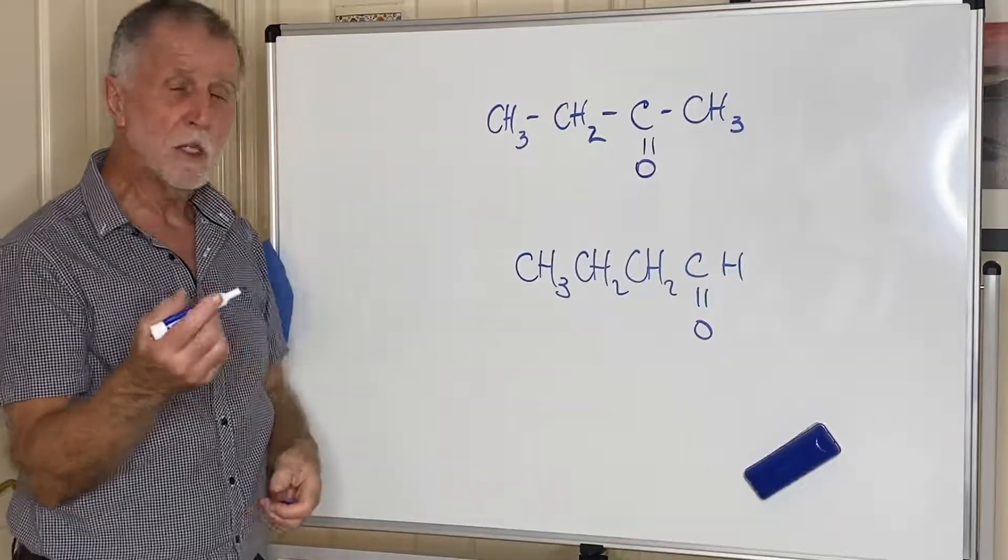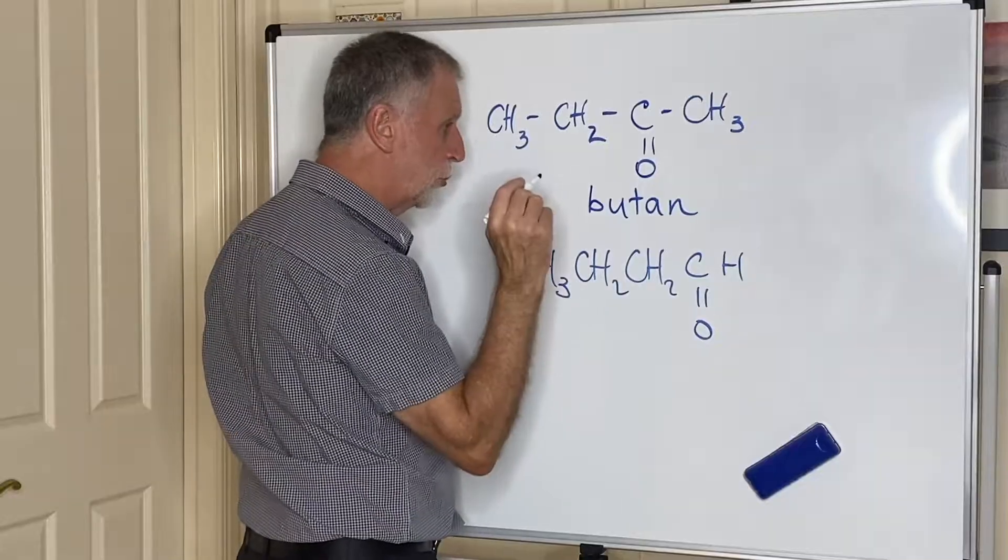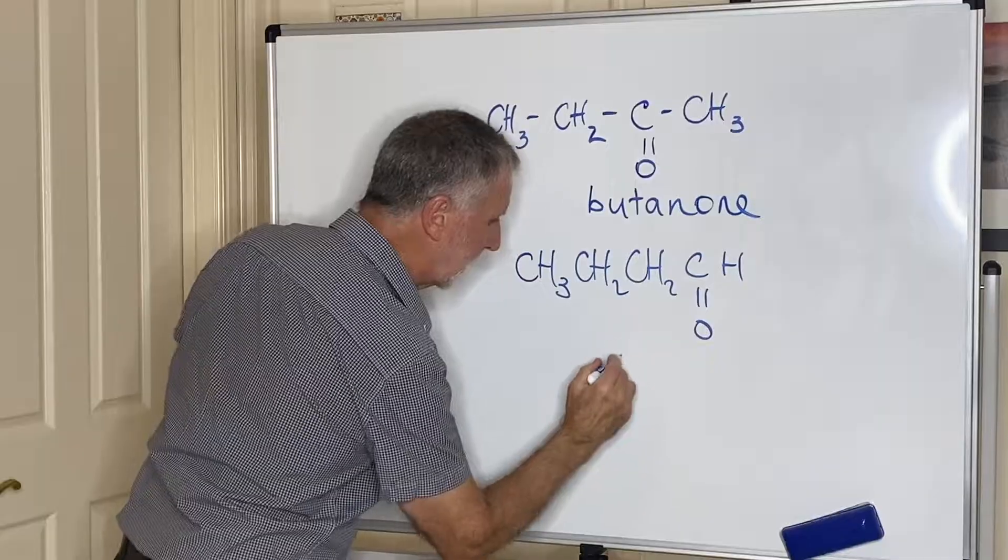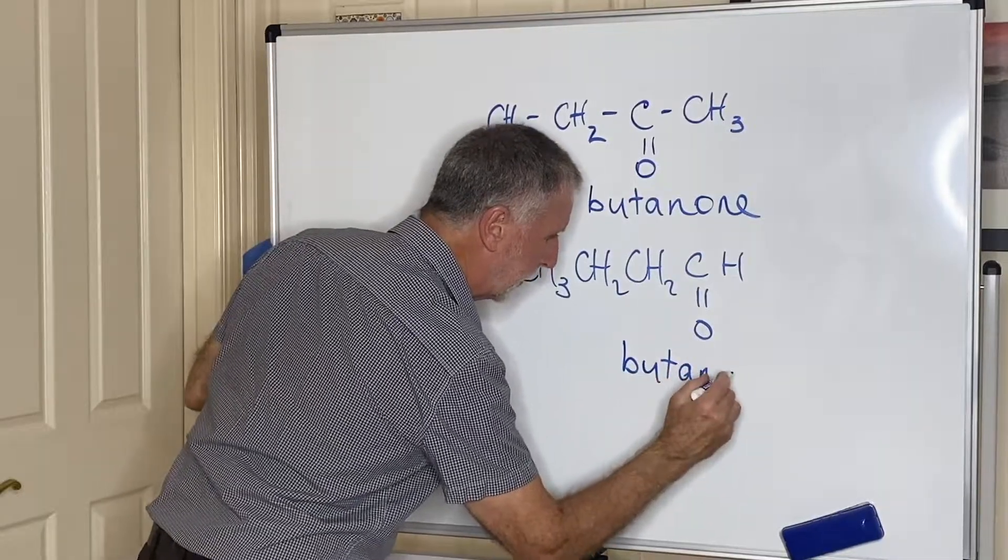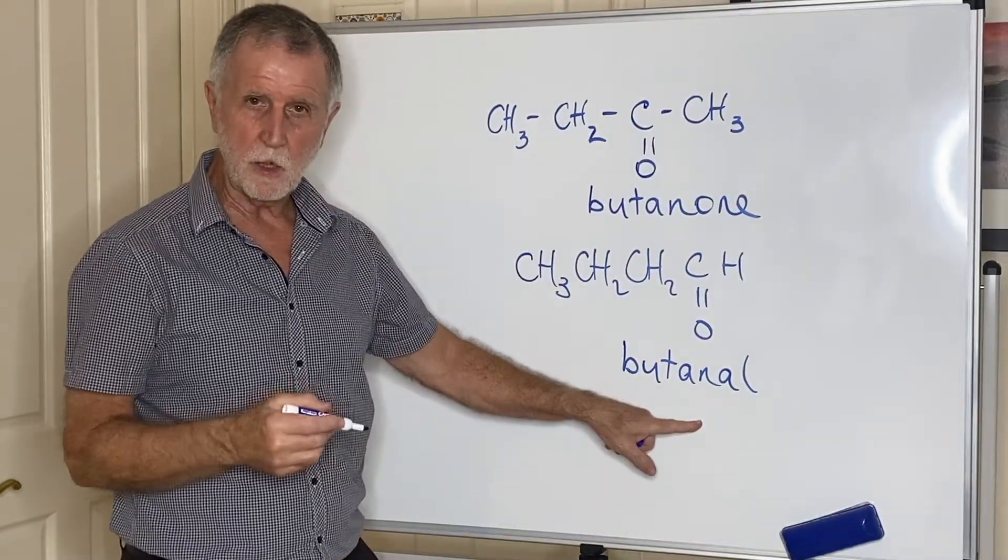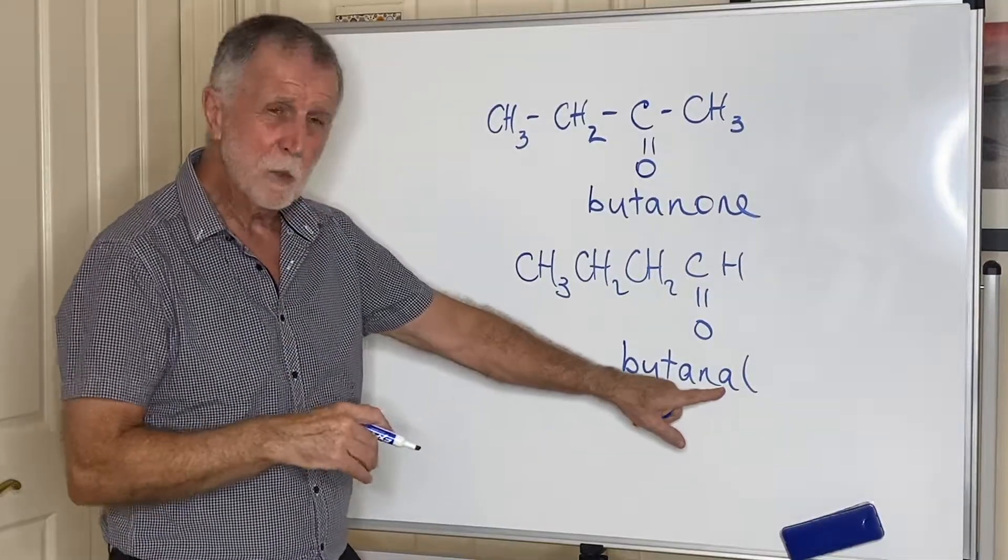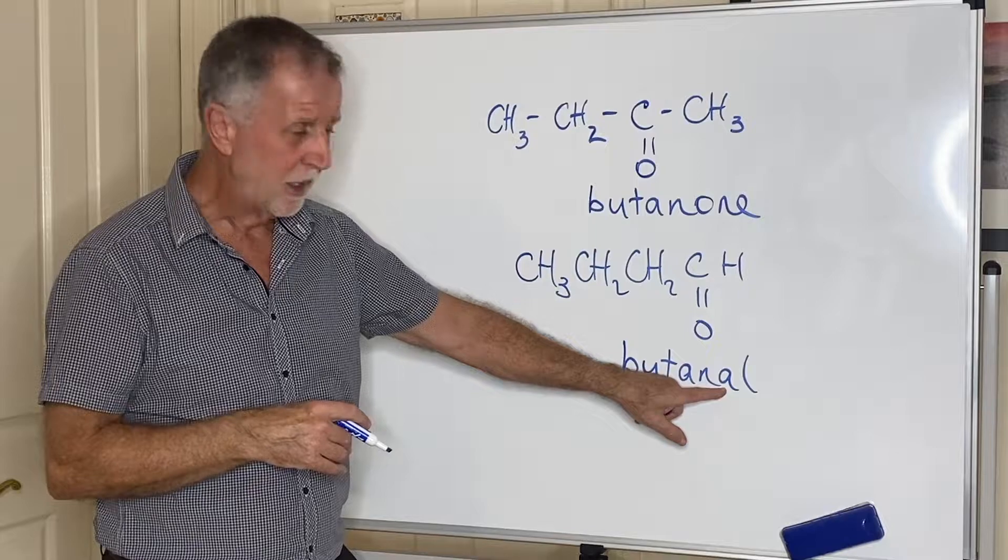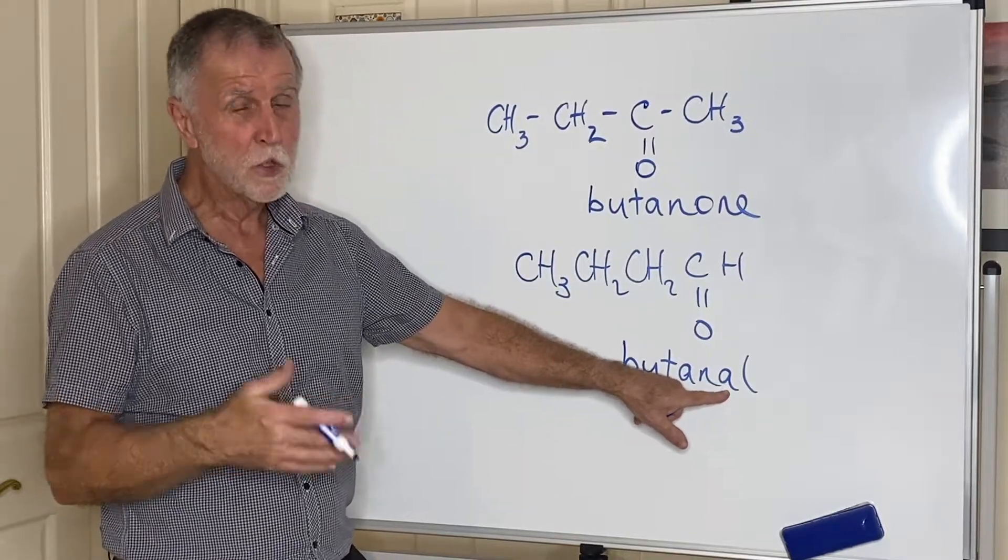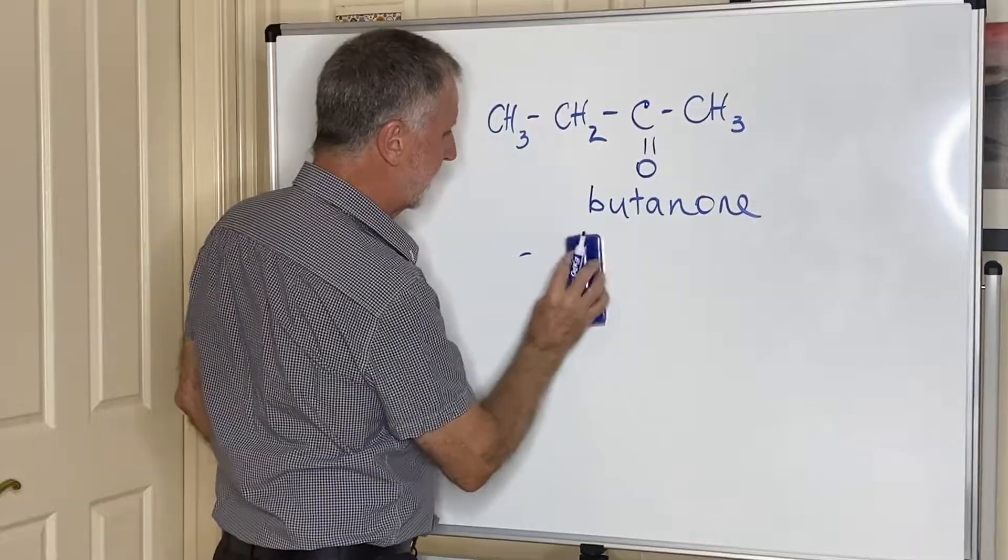To name aldehydes and ketones, take the alkane butane, drop the E, add the ending -one for ketones or -al for aldehydes. Butanone, butanal. If your writing is a little bit dodgy please be careful that you make it clear that it's an A there because if you put anything that looks like an O, that looks like butanol which is the alcohol.